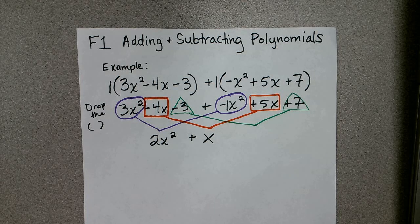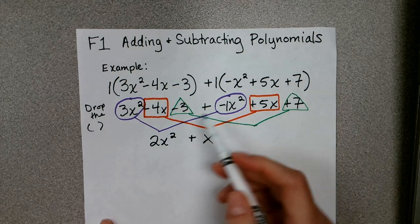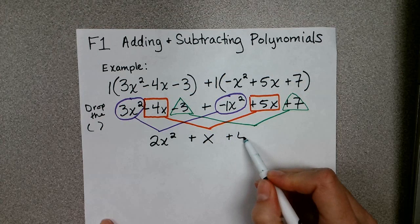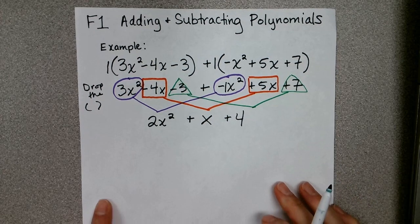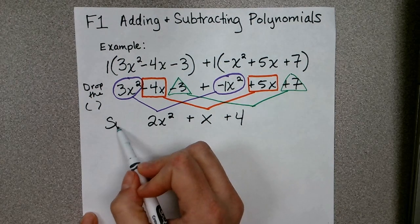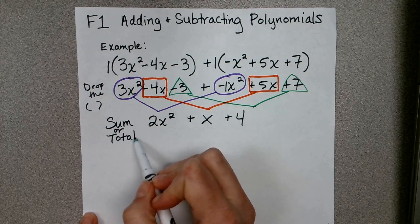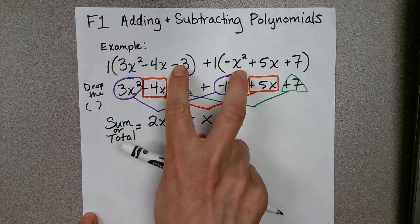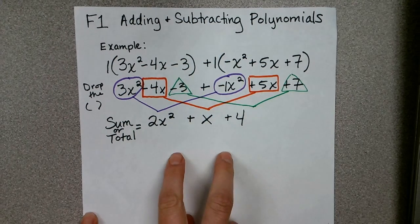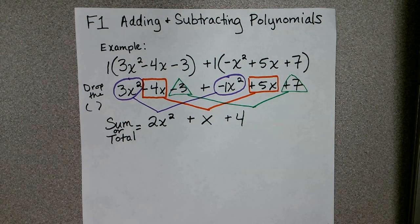That's going to leave me with 7 minus 3, which is positive 4. And so this is the sum or the total of the two polynomials that we started with up here.